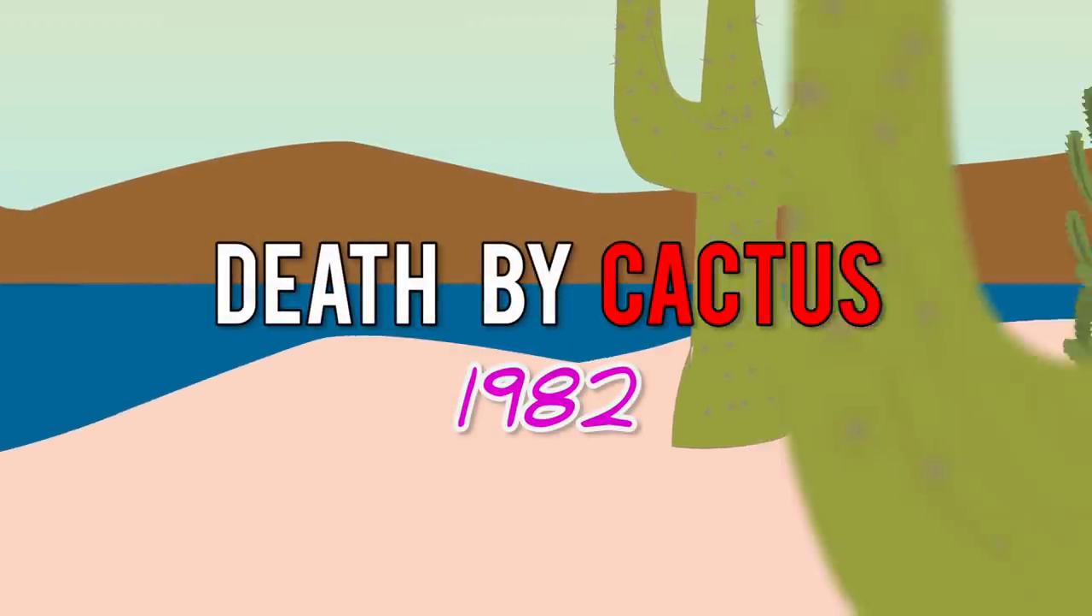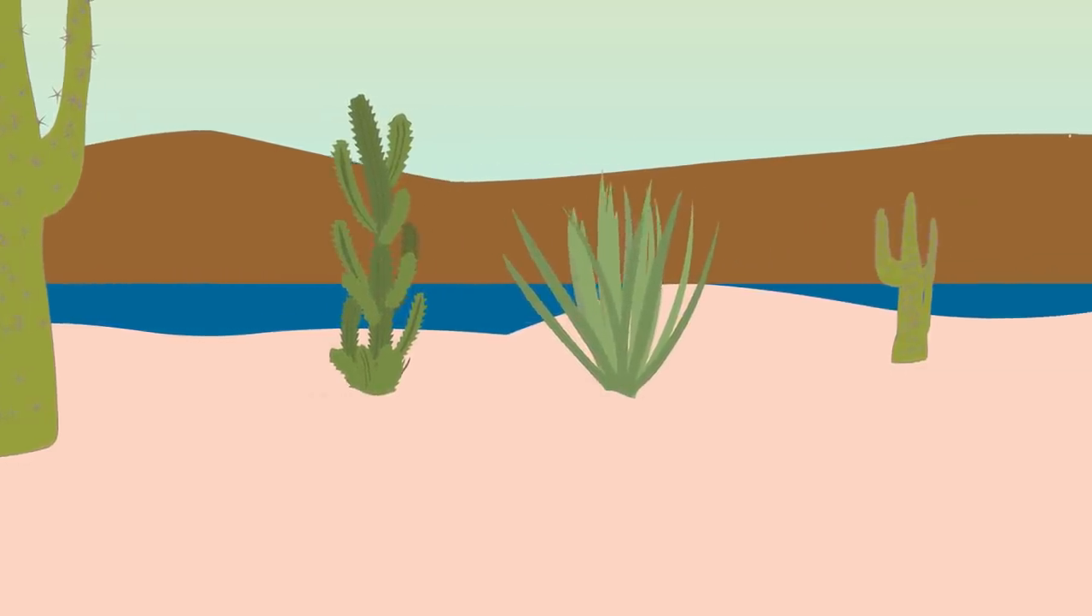Death by Cactus, 1982. In 1982, friends David Grunman and James Joseph Suchachi went wandering around Lake Pleasant, Arizona to do some target practice with their shotguns. They decided to fire at a small saguaro, a type of tall cactus, blasting it into pieces.